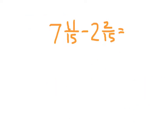Here I'm asked to find a difference because this is a subtraction problem: seven and eleven-fifteenths minus two and two-fifteenths. The denominators in this example are the same, so all we need to do is work with the fractional parts of these mixed numbers first. Eleven-fifteenths minus two-fifteenths — keeping the denominator the same — eleven minus two is nine, so we have nine-fifteenths.